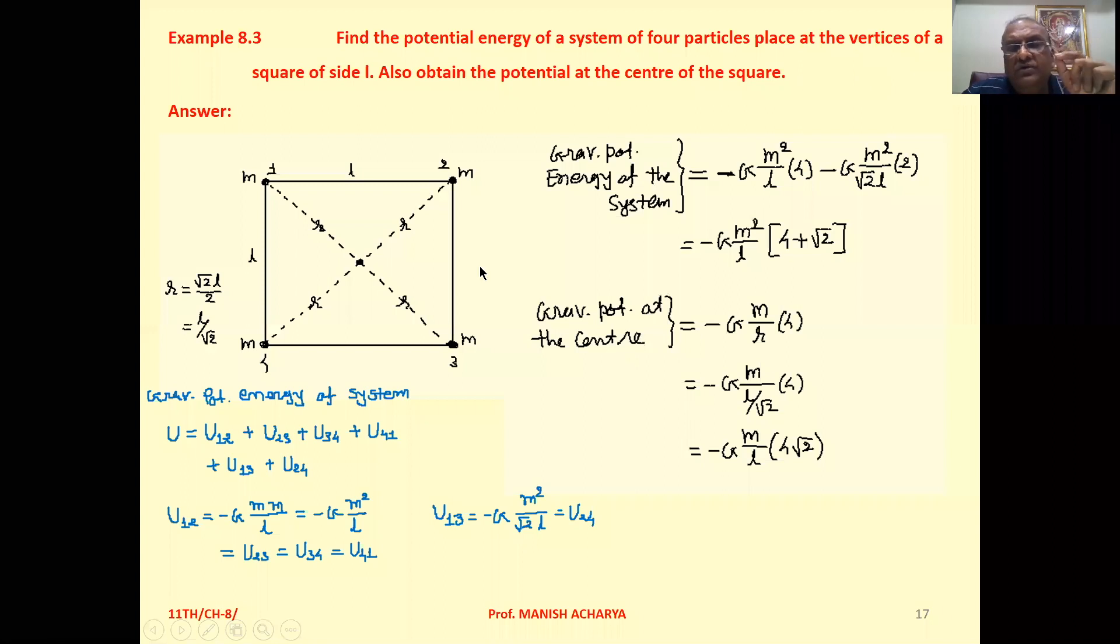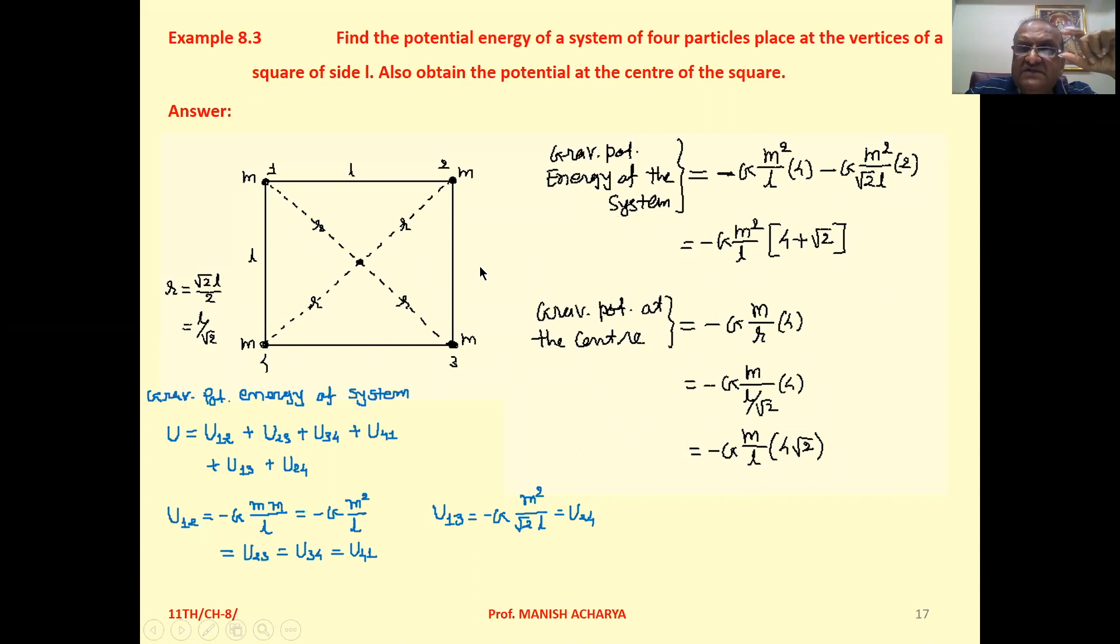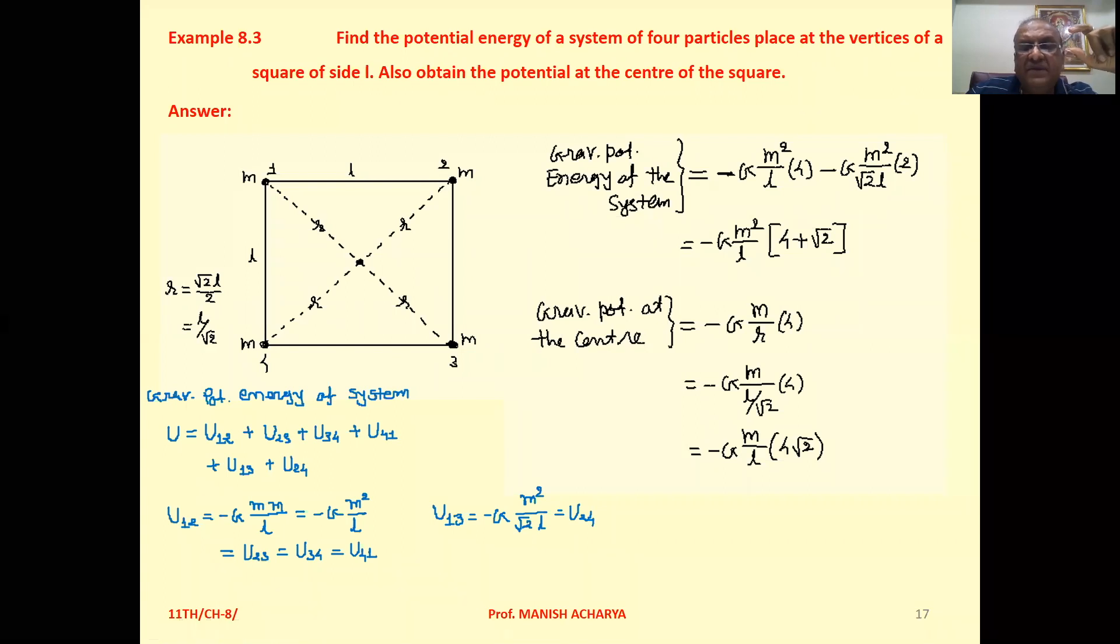Now we know the gravitational potential energy of a system of two objects is minus G m1 m2 upon r.